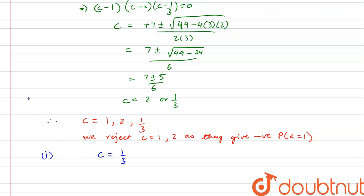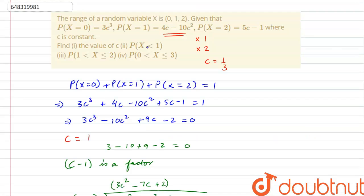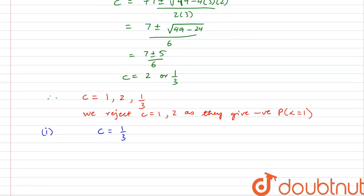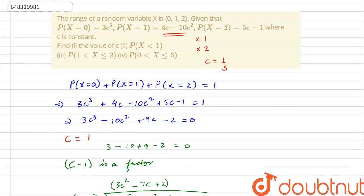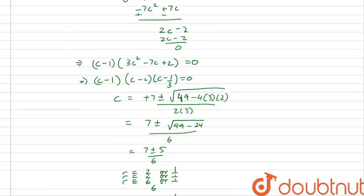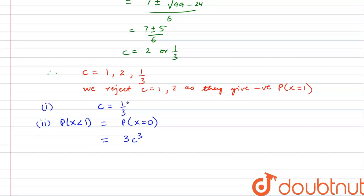Hence, we reject c=1 and c=2 as they give negative probability for P(x=1), and the final answer for c is c = 1/3. This is the solution to the first part. In the second part, P(x < 1) = P(x = 0) = 3c³. Substituting c = 1/3 gives 3 × (1/3)³ = 3 × (1/27) = 1/9. So P(x < 1) = 1/9.